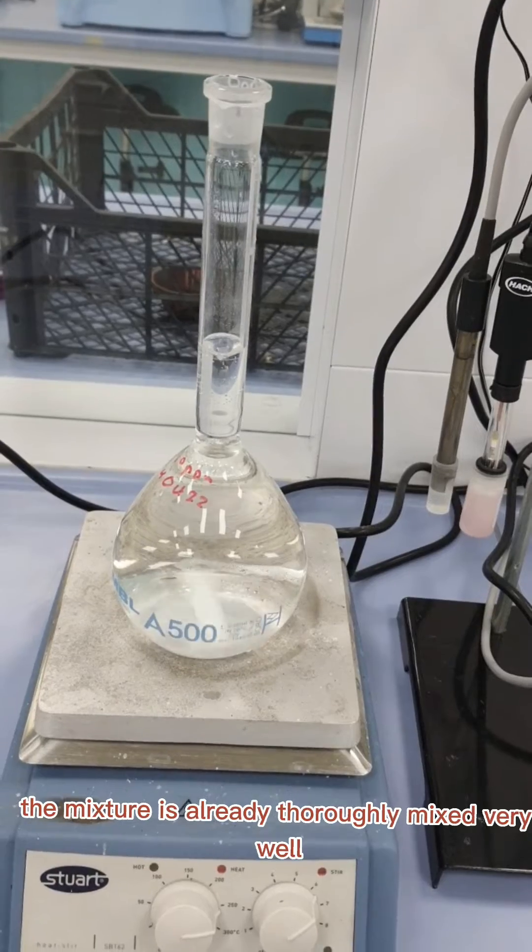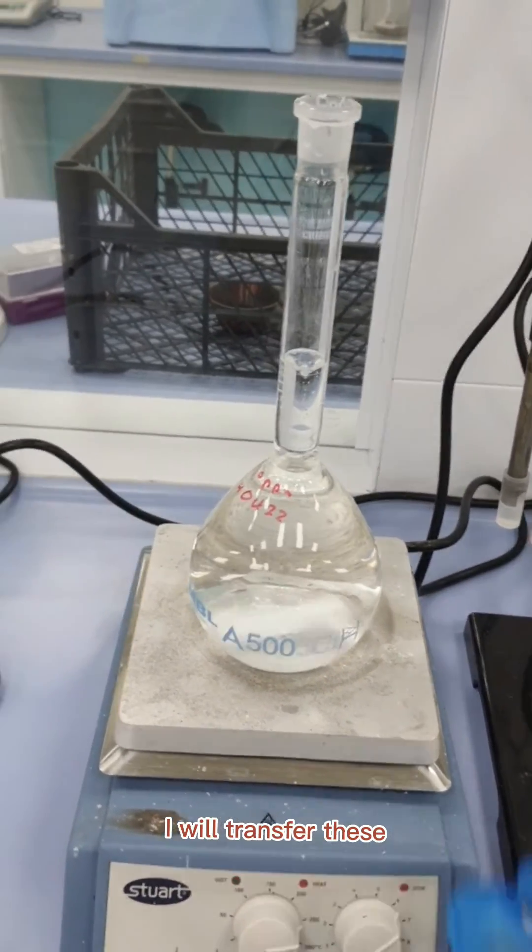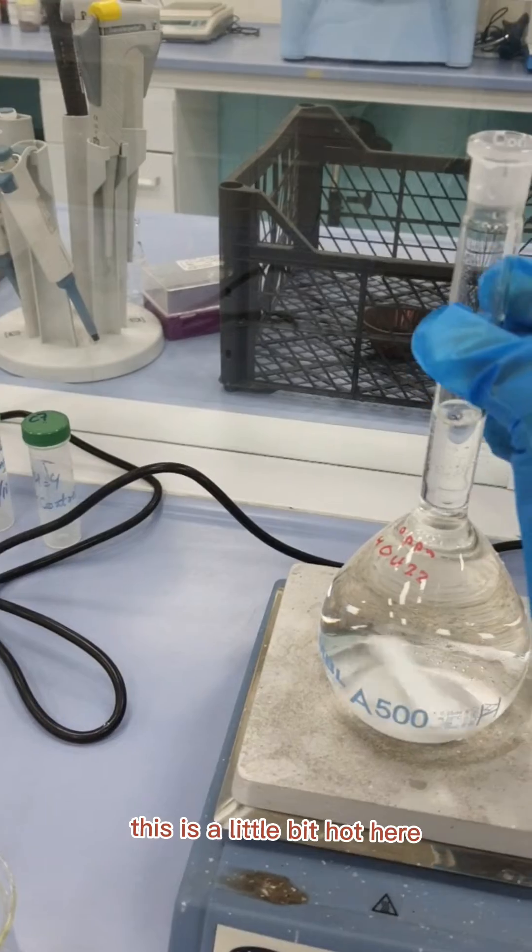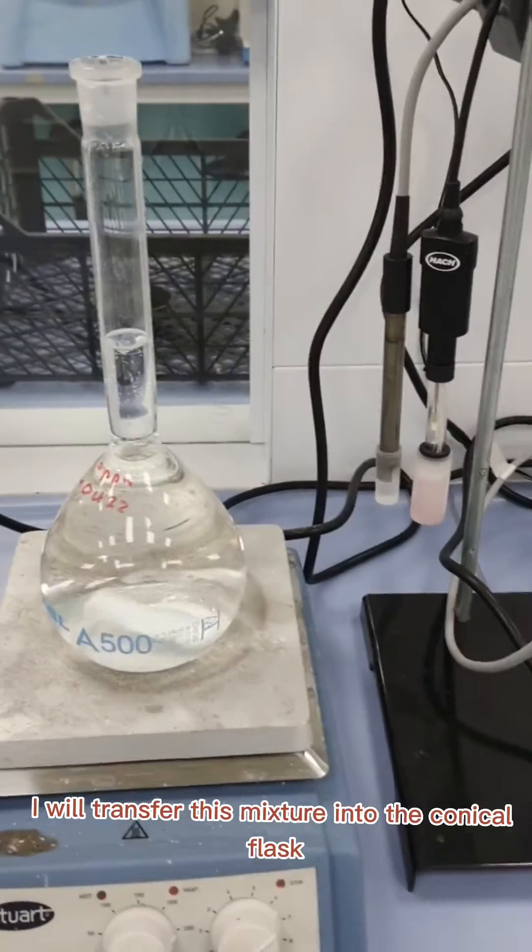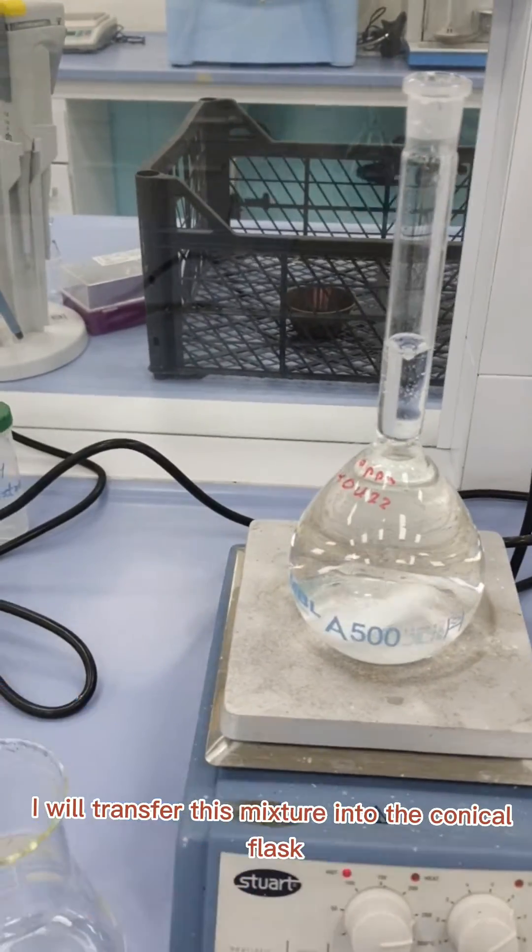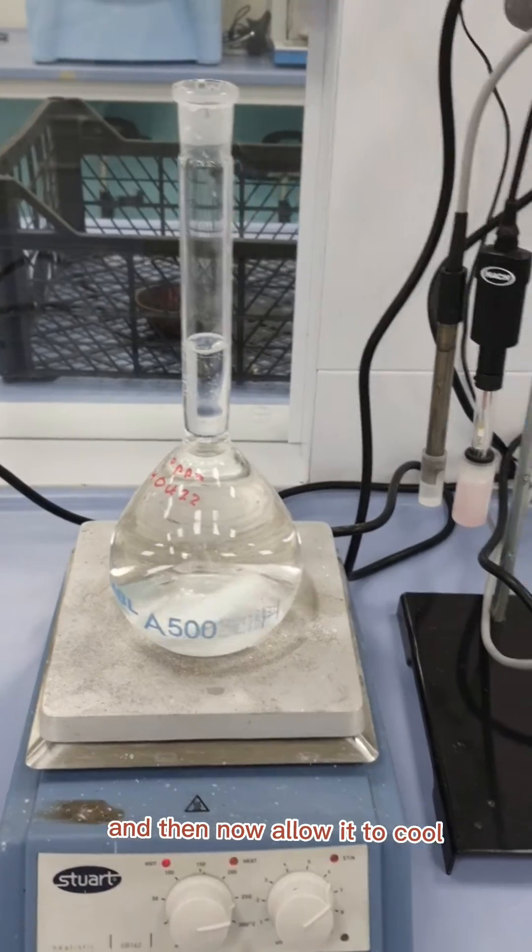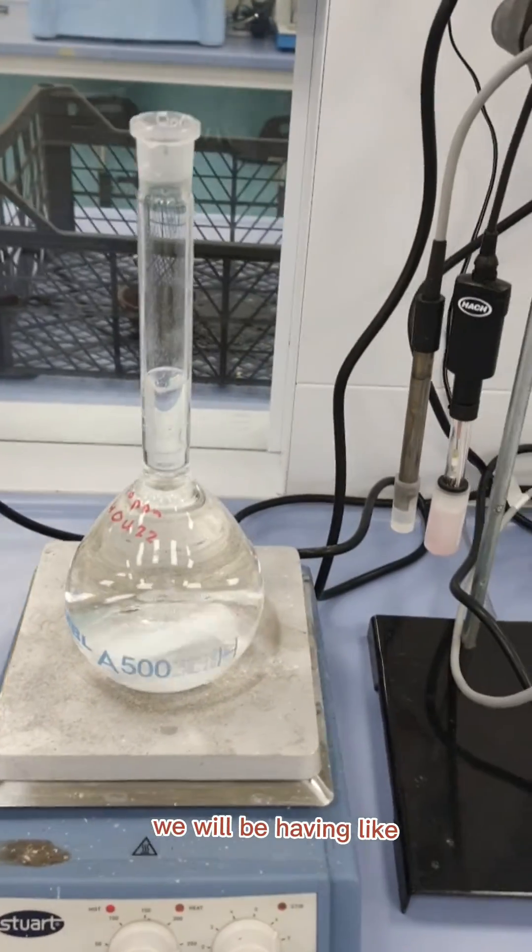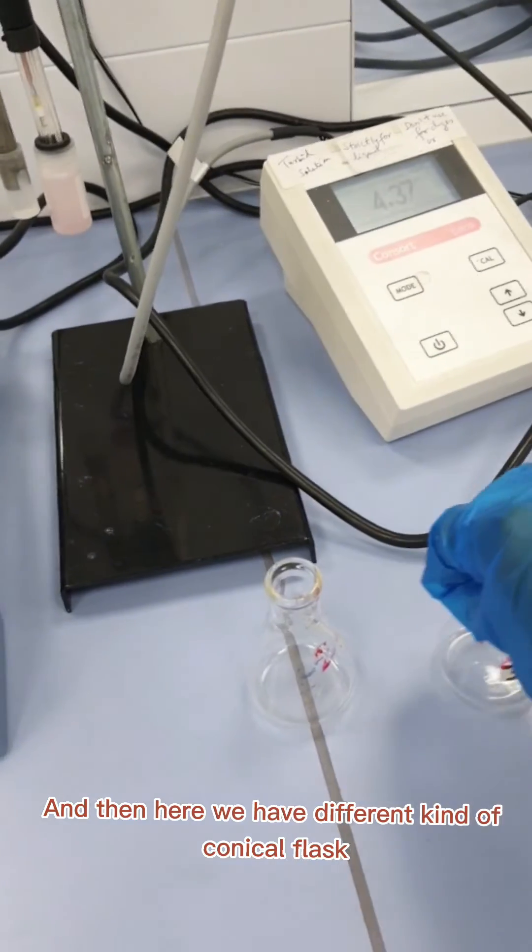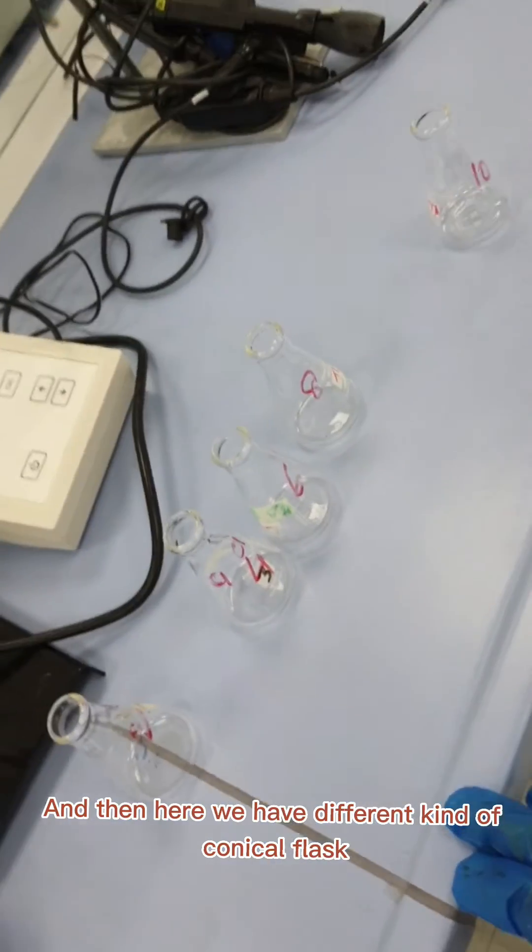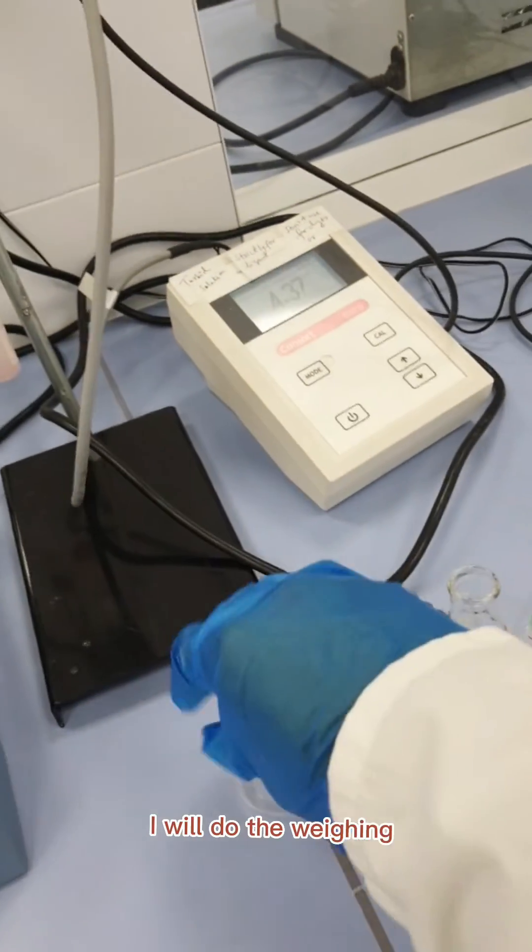The mixture is already thoroughly mixed very well. Now what I will do is transfer this mixture into the conical flask. This is a little bit hot here. Now I will transfer this mixture into the conical flask and then allow it to cool. After cooling we will be maintaining or adjusting the pH in different conical flasks.